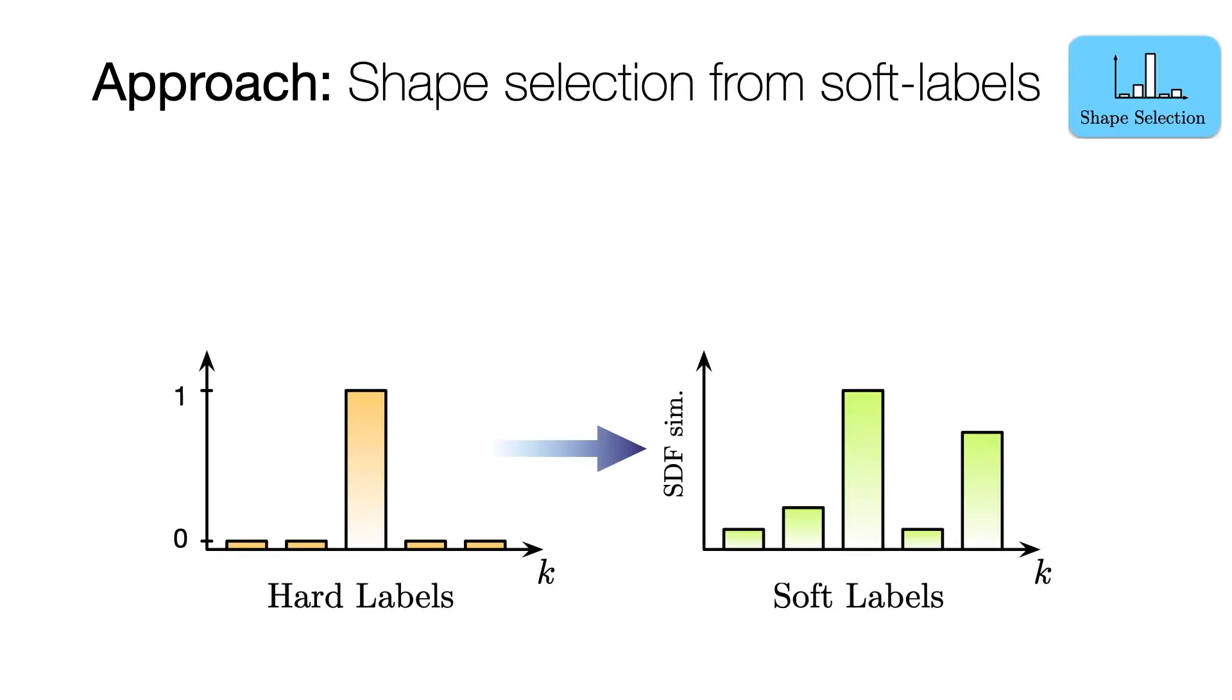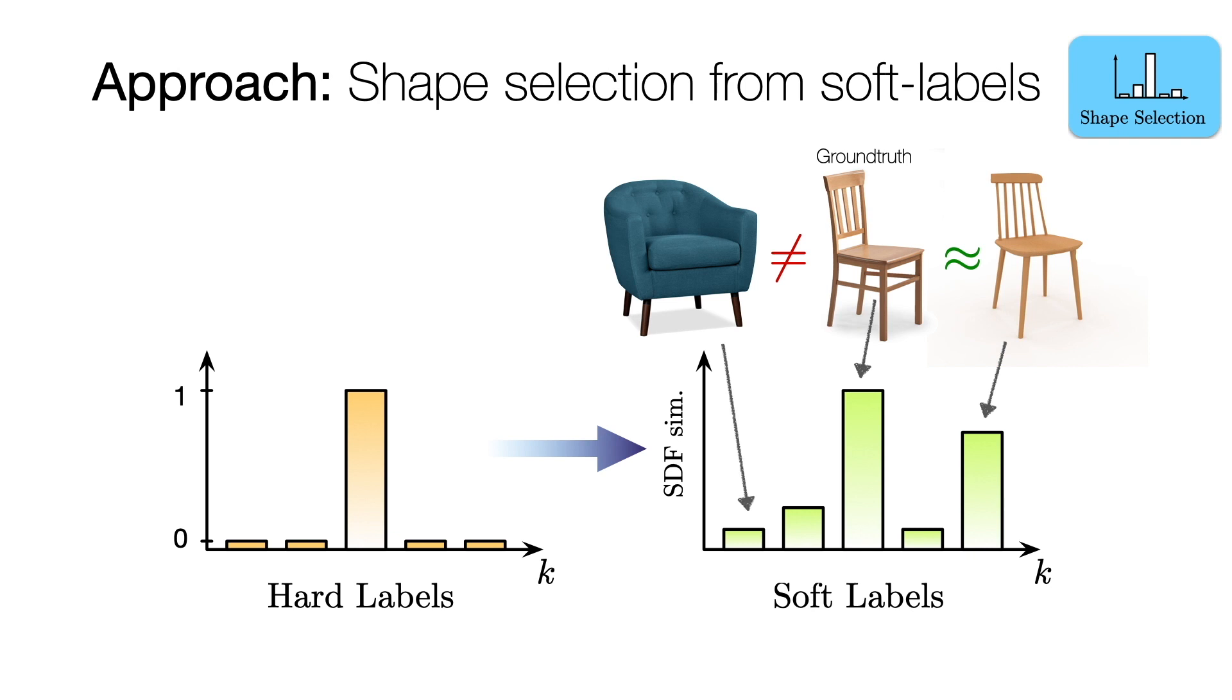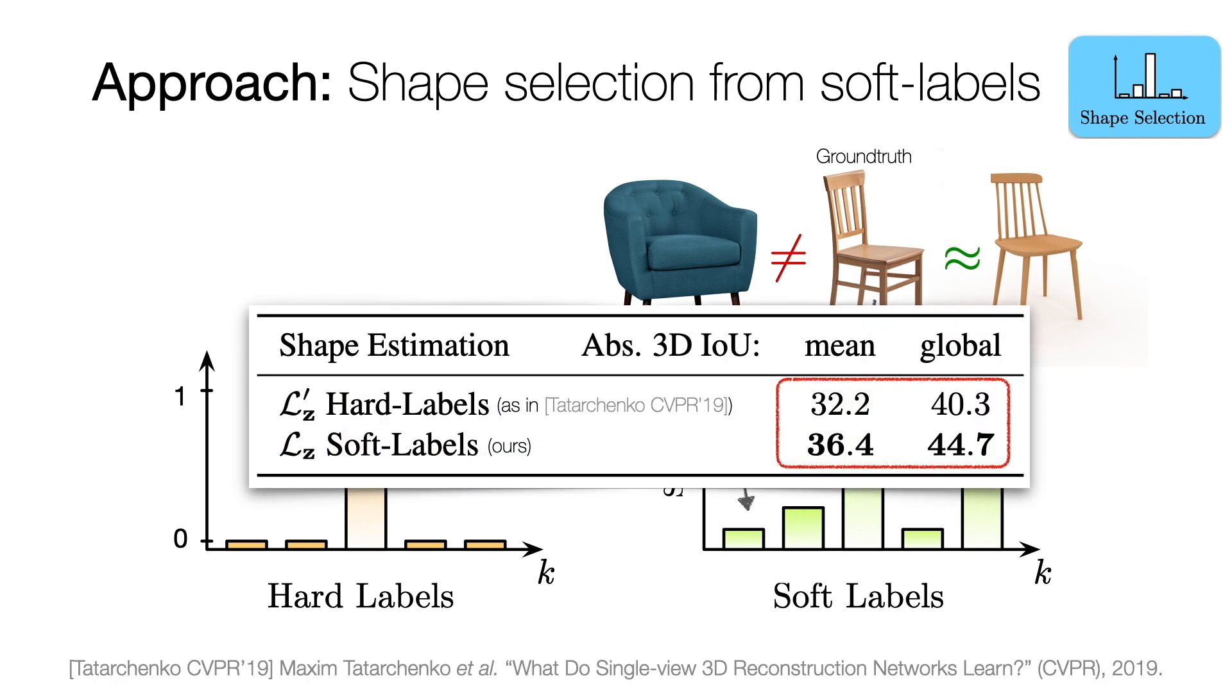We propose to formulate the reconstruction as a shape selection problem. This is implemented as a multi-label classification task. In particular, we replace hard labels by soft labels which are based on shape similarity. Intuitively, shapes that are geometrically close to the ground truth shape should contribute in a similar manner to the loss. This is unlike shapes that are geometrically very different. In experiments, we show that the usage of soft labels significantly increases the reconstruction quality.